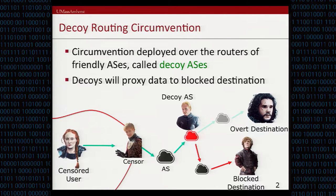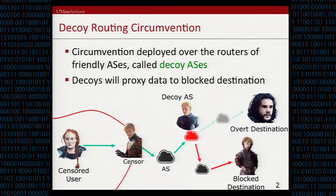In this case, the censor would assume that the censored user is talking to the overt destination, but in fact, because of that decoy router on the route, the user is actually talking to the blocked destination. Therefore, this defeats IP address-based filtering and censorship, which is one of the basic techniques for censorship.